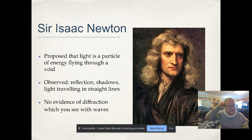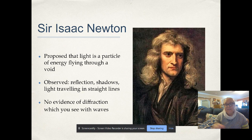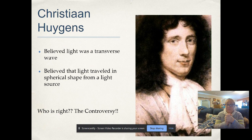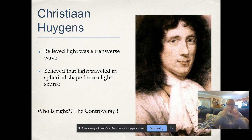One of Newton's arguments against the wave theory was that we don't see any diffraction — which is what we would expect if light were a wave. Then Christiaan Huygens argued the opposite: he believed light is a transverse wave that travels in a spherical shape from a light source, similar to how sound travels in all directions from a speaker.